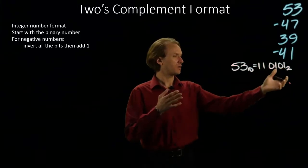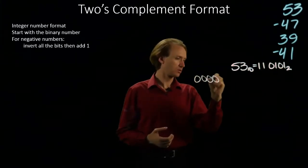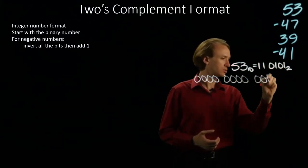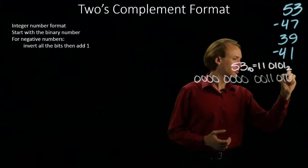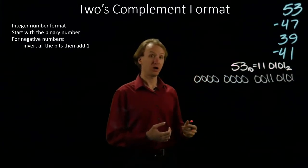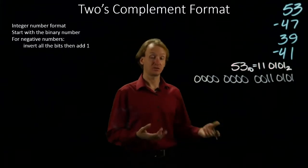Next, I'm going to write this number out using 16 bits. Since 53 is a positive number, I'm done. That's positive 53 in two's complement.